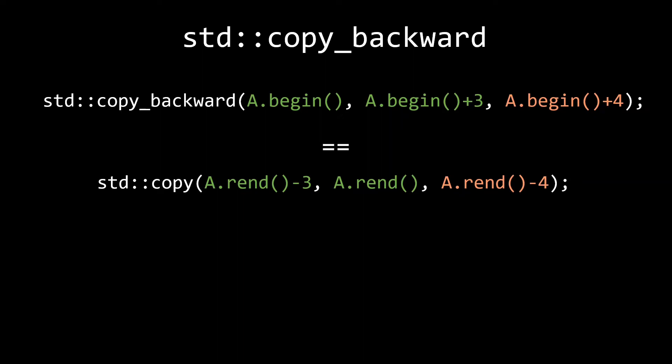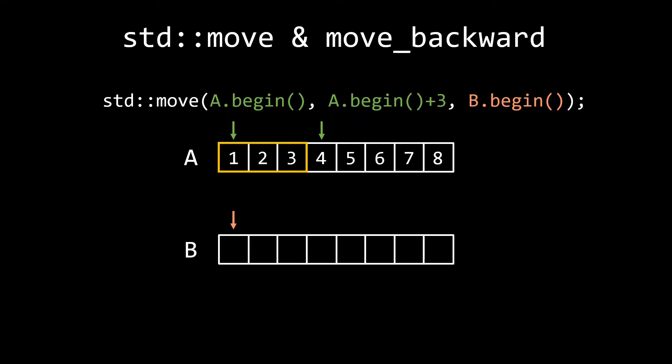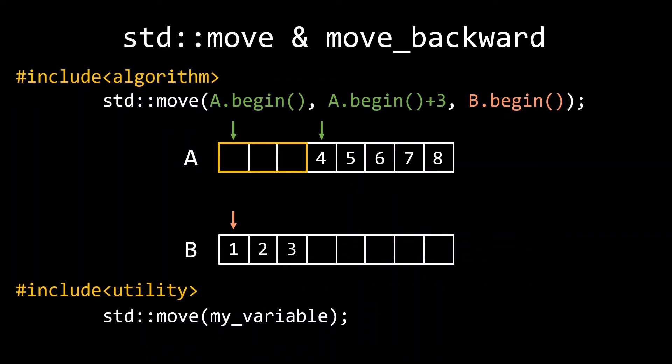Both copy and copy_backward also have a variant that moves elements instead of copying them. The std::move and move_backward. I will not demonstrate move_backward, as it is literally the same thing as copy_backward, except that it moves elements instead of copying them. The reason I am showing you std::move is to make you aware that if you see std::move with three iterators in the code, this is not the std::move taking a single argument which is used to trigger move semantics. One is from the algorithms header, the other one is from the utility header, and they have a very different meaning. If you want to learn more about move semantics and the role that the std::move from the utility header plays in it, check out my video on move semantics. There is a link in the description.